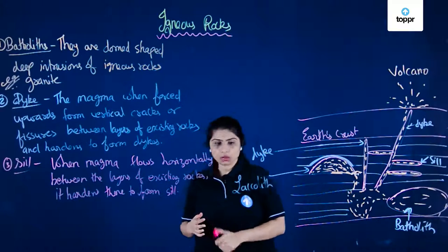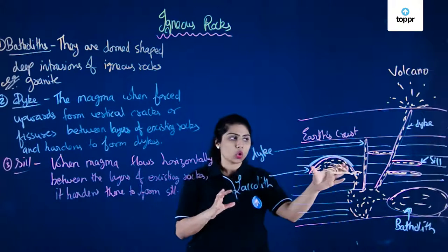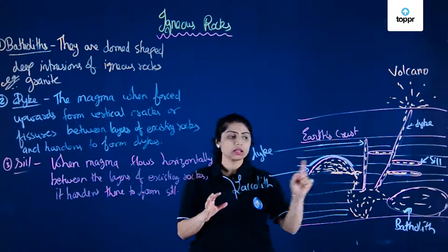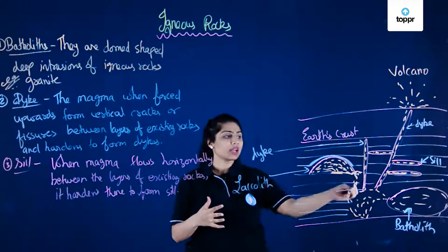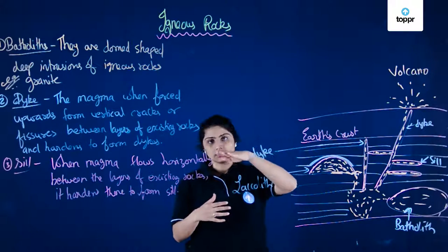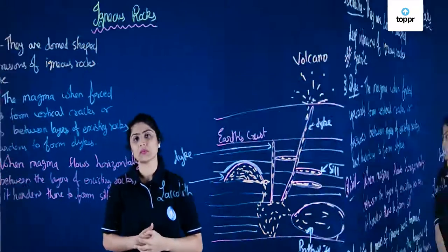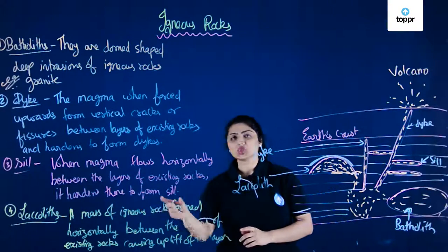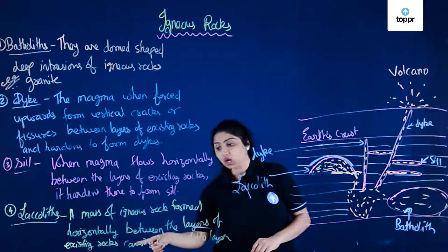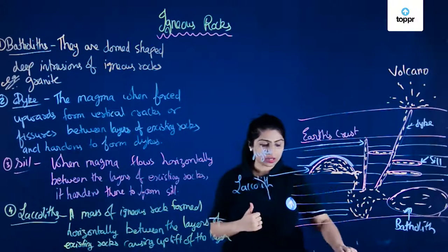Laccoliths are a mass of igneous rock with a lens shape, formed when magma fills a horizontal layer and uplifts the overlying layer. A laccolith is formed horizontally between the layers of existing rocks, causing uplift of the layer above.